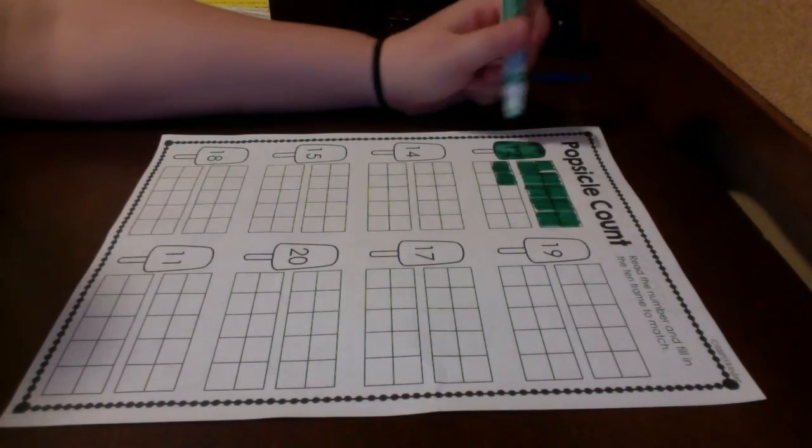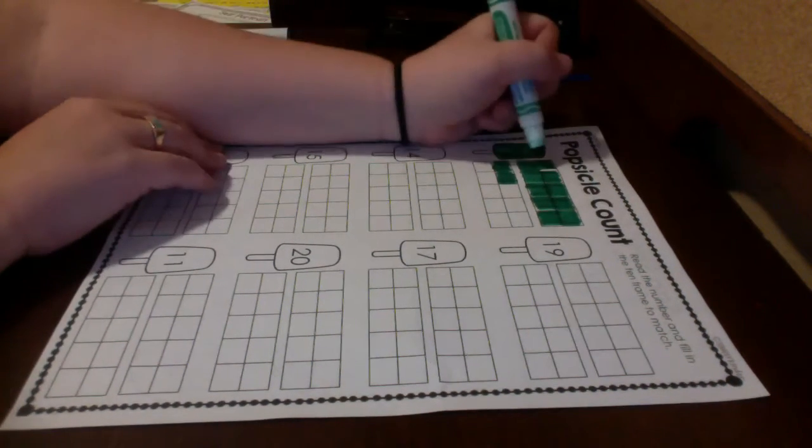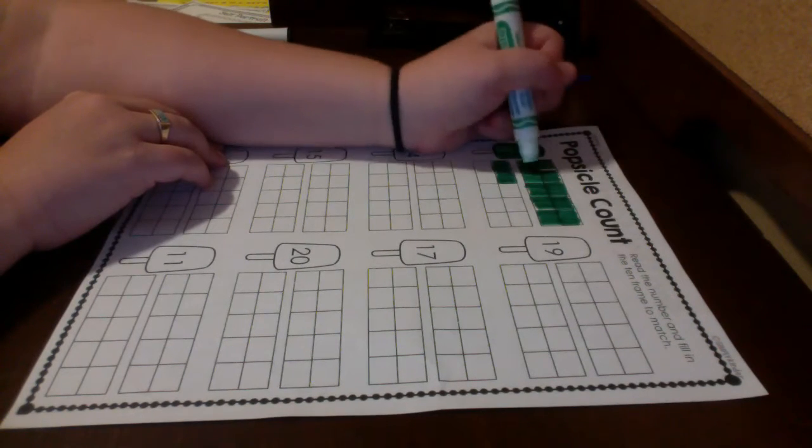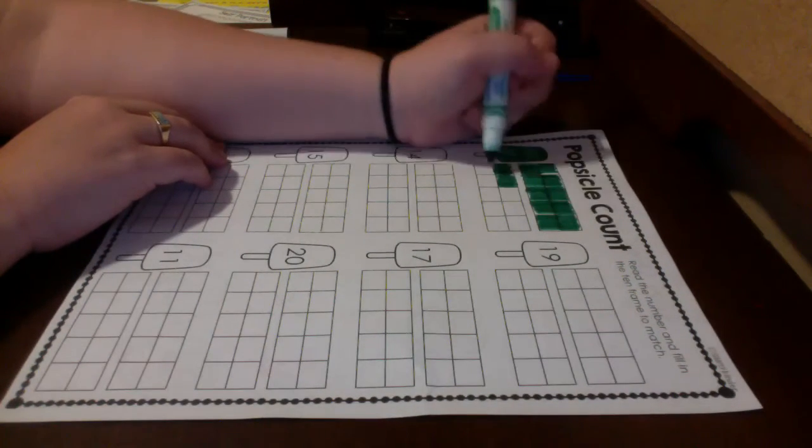Now let's count to make sure the 10 frame matches the popsicle stick. So we have 12. Ready? One, two, three, four, five, six, seven, eight, nine, 10, 11, 12.